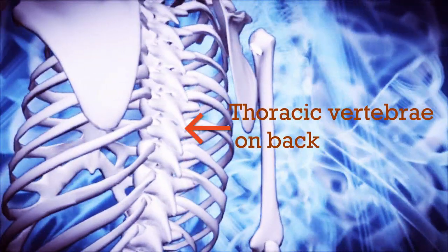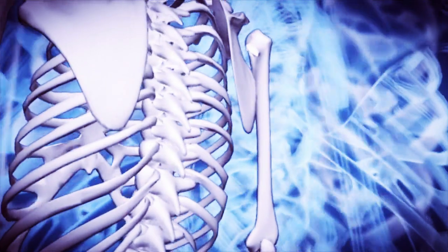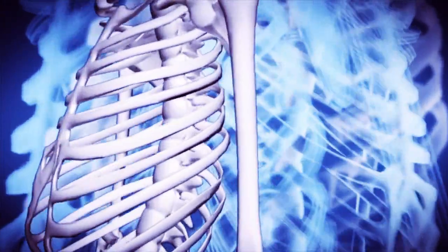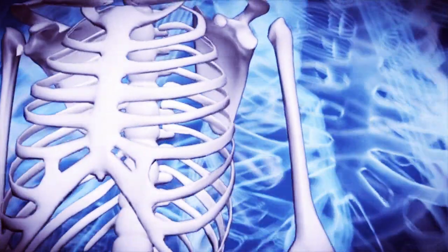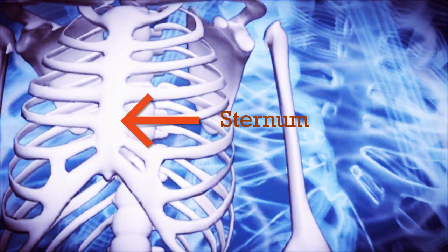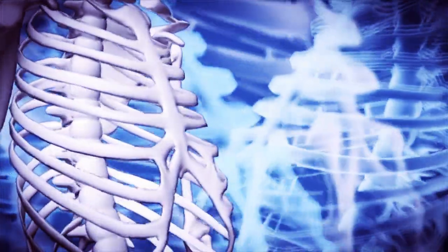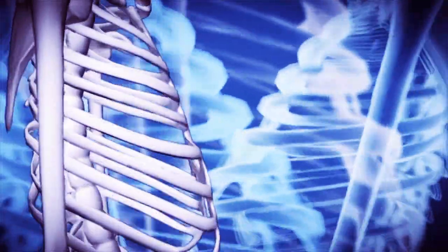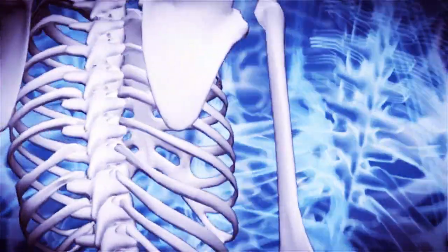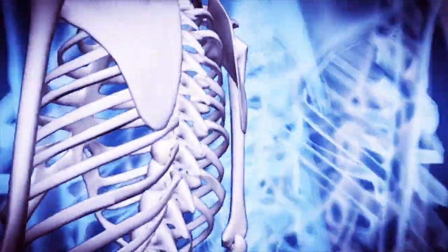The thoracic wall is circumferenced by 12 pairs of ribs and the sternum being present on the front. The change in the circumference of the chest is brought about by movement of the ribs and sternum.